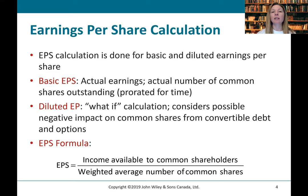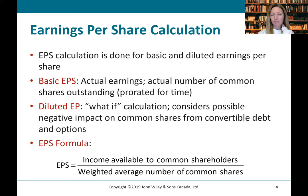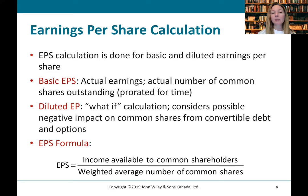EPS calculations are done for both basic and diluted earnings per share. Basic EPS is the actual earnings over the actual number of common shares outstanding, and we do prorate this for the time that the shares were outstanding during the period. Diluted EPS is a what-if calculation. This considers possible negative impacts on common shares from convertible debt or options, which could be exercised to result in more common shares. The formula for EPS is income available to common shareholders divided by the weighted average number of common shares.